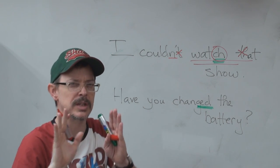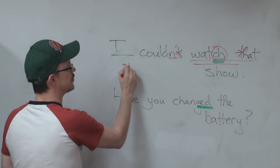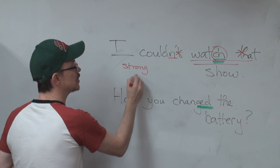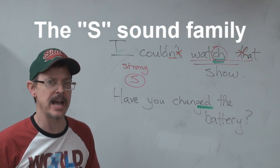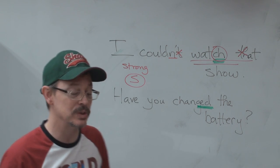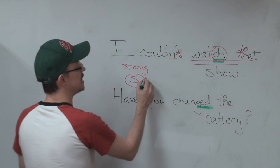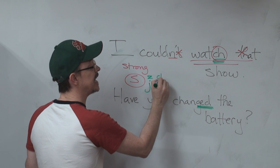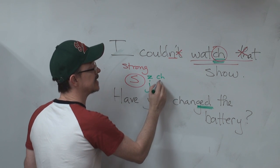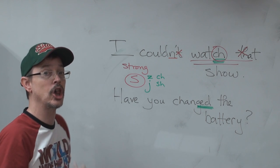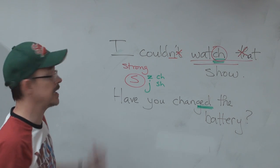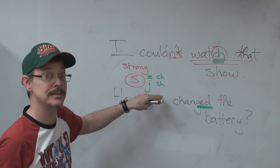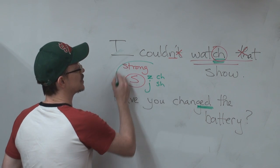Now, let's talk about the strong sounds. The strong sounds: S-N-L. And the S — let's look at the S sound family. There are many sounds similar to the S. We have the Z, we have the J, we have the CH, we have the SH. These sounds are all similar to the S. So these are the strong sounds.